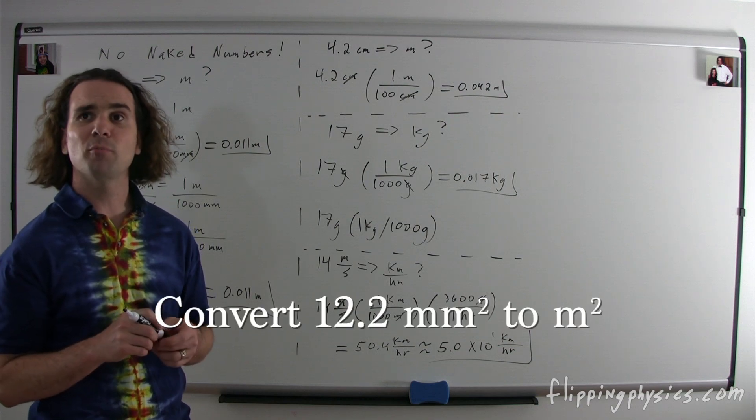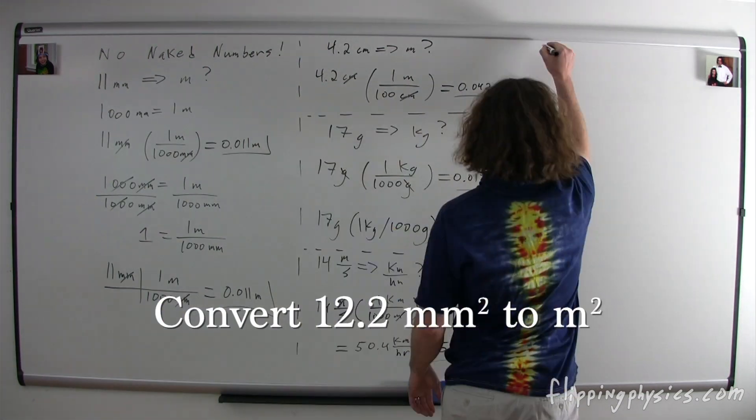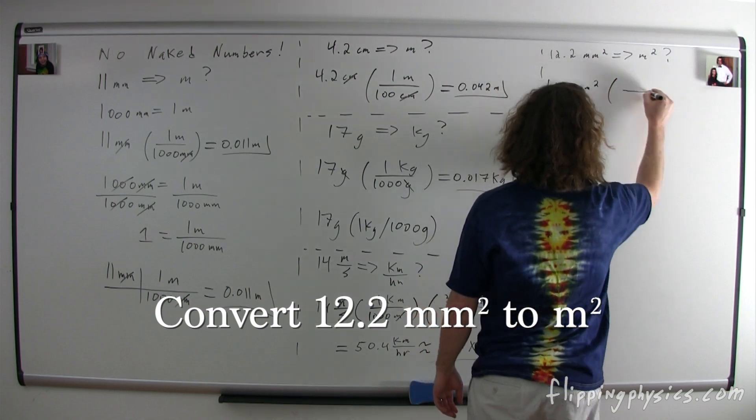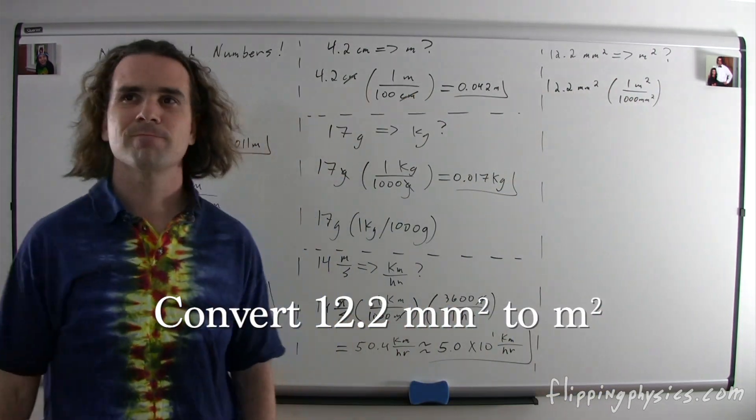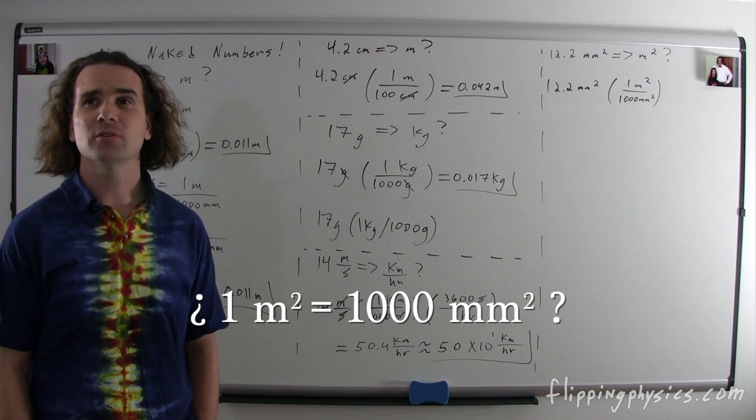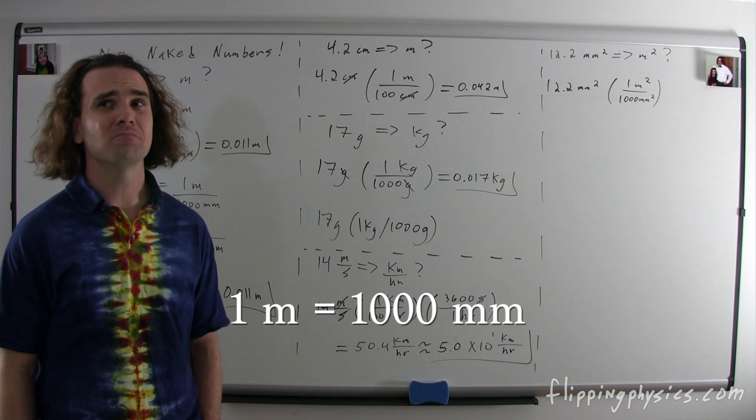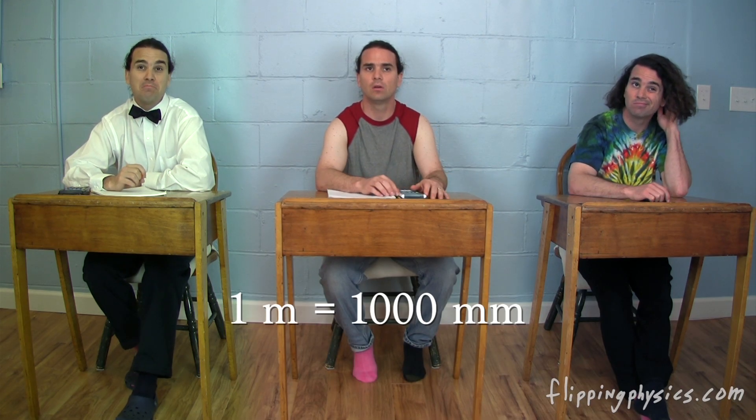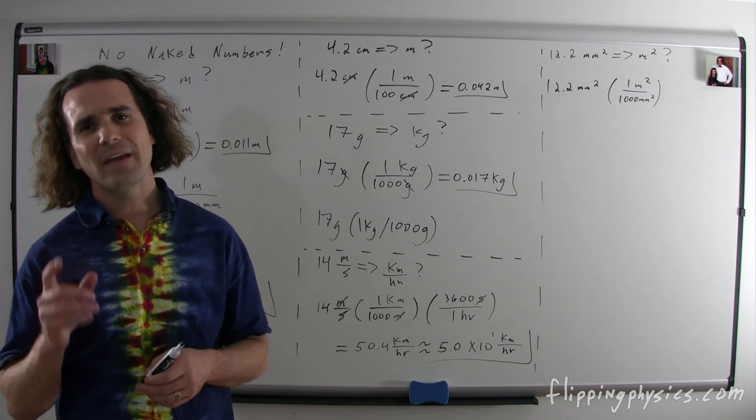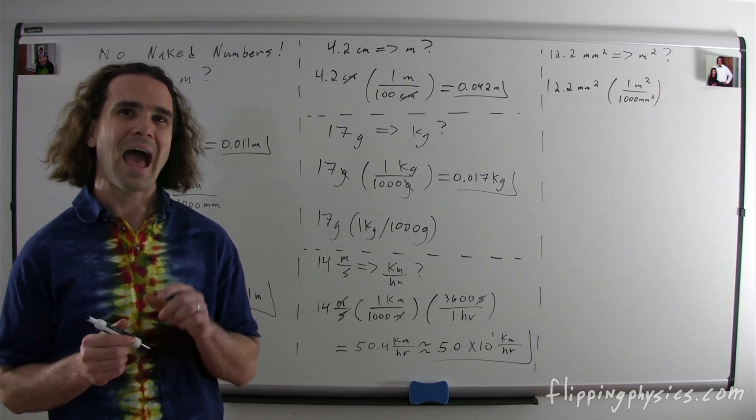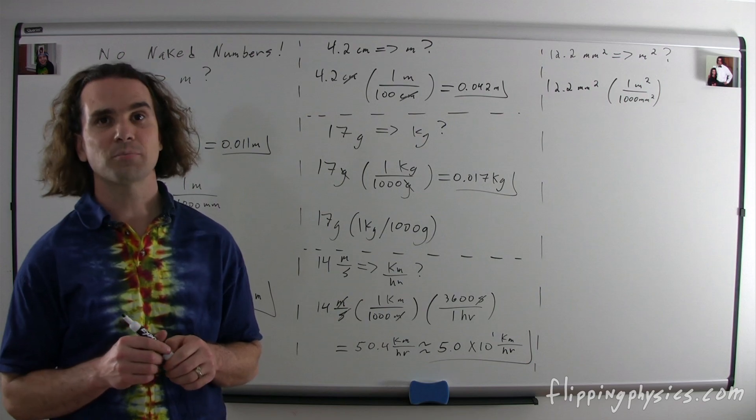Let's do another one. Bo, please convert 12.2 millimeters squared to meters squared. So, we need to multiply 12.2 millimeters squared by 1 meter squared over 1,000 millimeters squared. In other words, 1 meter squared equals 1,000 millimeters squared? Is that right? Remember, it's actually 1 meter that equals 1,000 millimeters. So, then 1,000,000 millimeters squared equals 1 meter squared. Absolutely, that is correct. However, that is a specific answer for this specific problem. I'm more interested in a solution that is applicable to all other problems as well. What I want to know is how do we fix what is currently on the board to solve this problem?